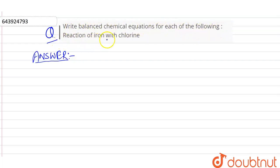Reaction of iron with chlorine. Iron, that is Fe, plus chlorine, that is Cl₂,